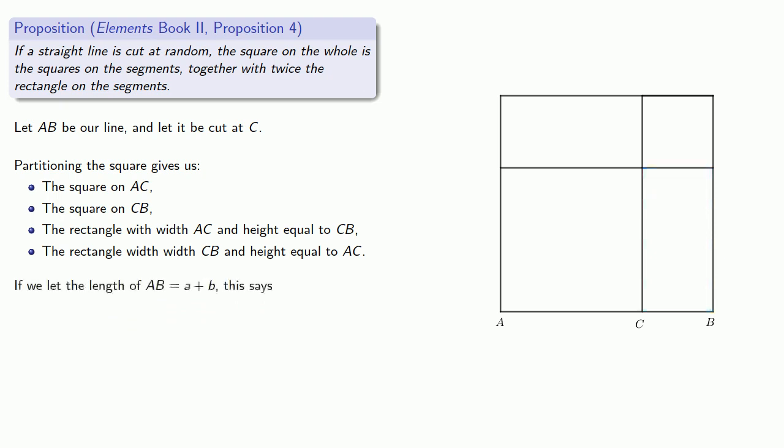Now, if we let the length of AB be A plus B, then this says that the square on the whole, that's the square of A plus B, is equal to the squares on the parts, A squared plus B squared, plus twice the rectangle on the segments. That's 2AB.